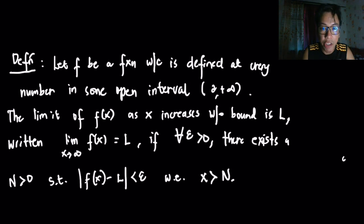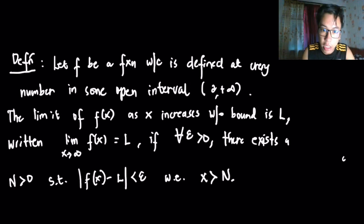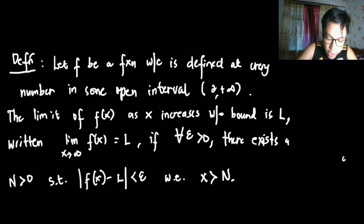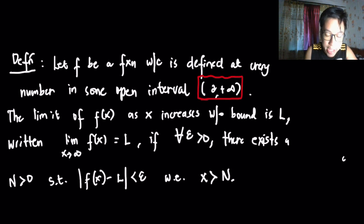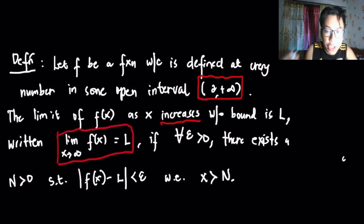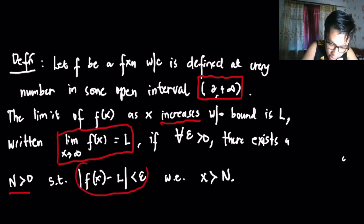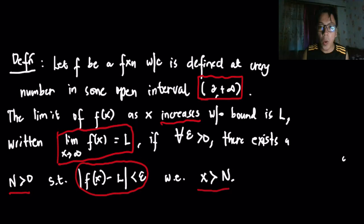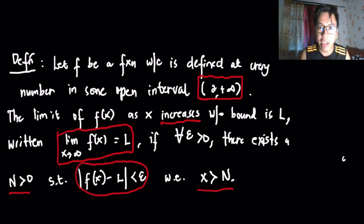We will now discuss the formal definition of the limit of functions at infinity. We consider a function f defined at every number in some open interval (a, ∞). The limit of f(x) as x increases without bound is L — written as lim f(x) as x→∞ = L — if for every epsilon greater than 0 there exists a number N such that the condition holds whenever x is greater than N.